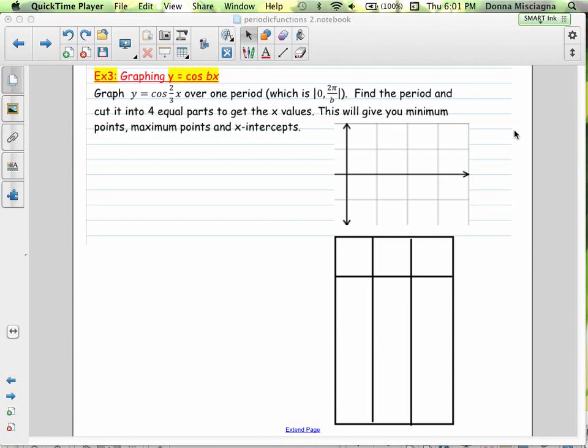Let's graph y equals cosine two-thirds x for one period. Let's write down all of our features for our graph.